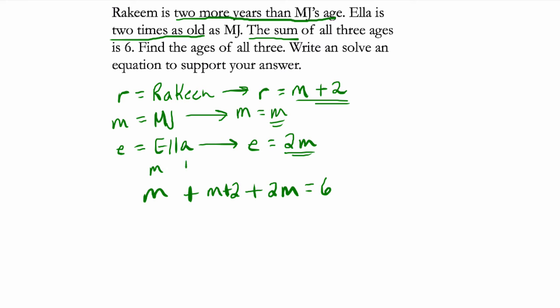So this is really just MJ plus Rakim plus Ella is six. But we can't really do anything with this. Here we can compute. We combine like terms. We have two M's plus an M plus an M, that's four M, plus two is six. So we can actually find MJ's age.